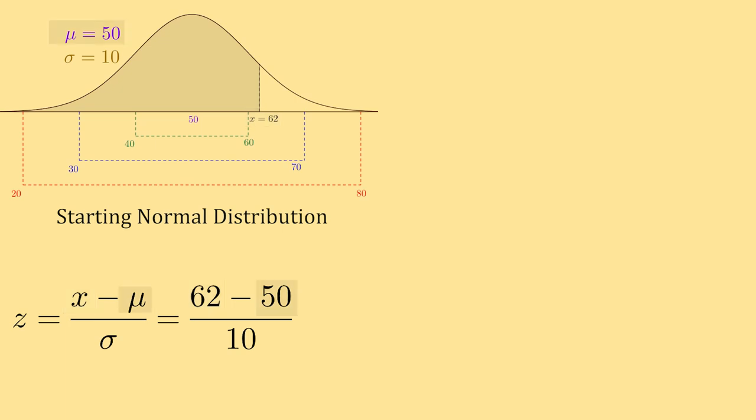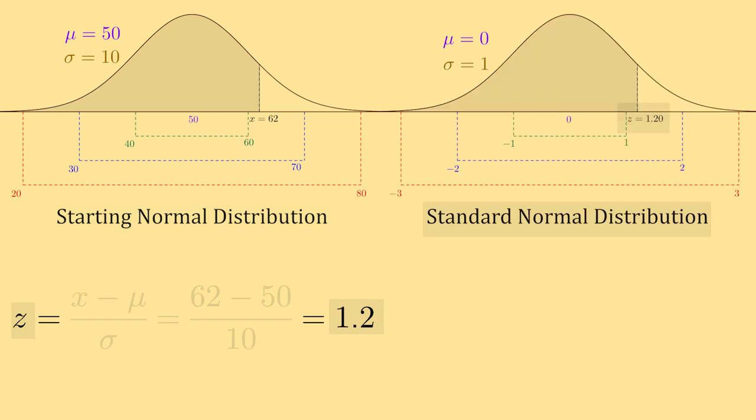Z-scores give us a way to translate a point from any normal distribution to a point in the standard normal distribution, which has a mean of 0 and a standard deviation of 1. Once we get the z-score, we can then find the area of the standard normal distribution above or below the z-score.